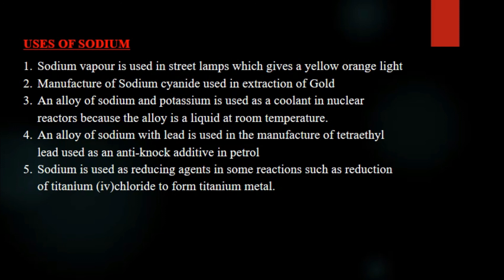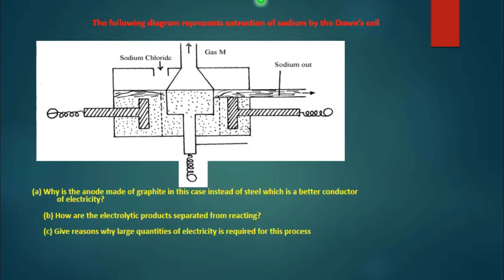Uses of sodium: sodium vapor is used in street lamps, which give a yellow-orange light. It is used in the manufacture of sodium cyanide, which is used in the extraction of gold. An alloy of sodium and potassium is used as a coolant in nuclear reactors because the alloy is liquid at room temperature. An alloy of sodium and lead is used in the production of tetraethyl lead, an anti-knock additive in petrol. Sodium is also used as a reducing agent in some reactions.